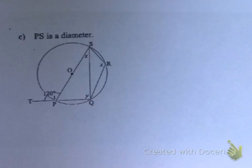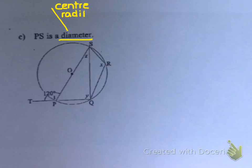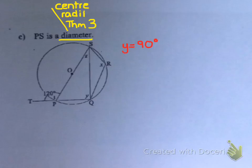Here's another example. PS is a diameter. As soon as I see the word diameter I think of a center of a circle, radii which might be equal, and I immediately think of Theorem 3. Theorem 3 said that a diameter subtends 90 degrees at the circumference. So immediately I know that Y equals 90 degrees — that is Theorem 3, reason: angles in a semi-circle.